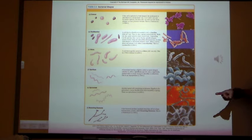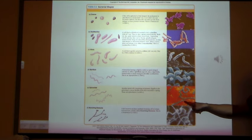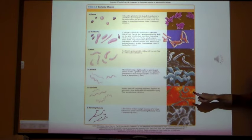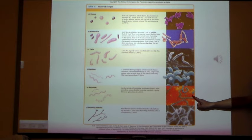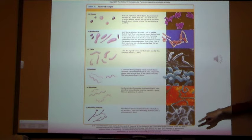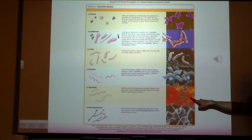Spirochete bacteria look like a little corkscrew. They're very good at drilling. For example, Lyme disease is caused by a spirochete bacterium — they can drill and penetrate your central nervous system and hide in your nerves. Syphilis is also a spirochete bacterium — they can directly drill through the placenta. If a mother is infected with syphilis, the bacteria can cross and give the baby congenital syphilis.